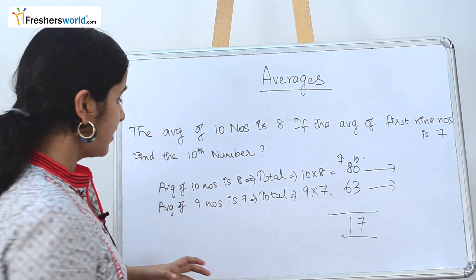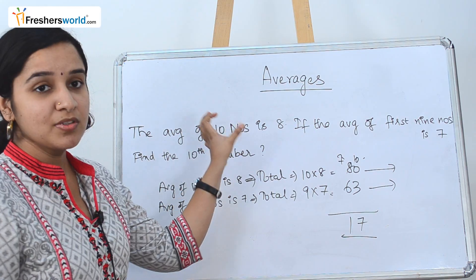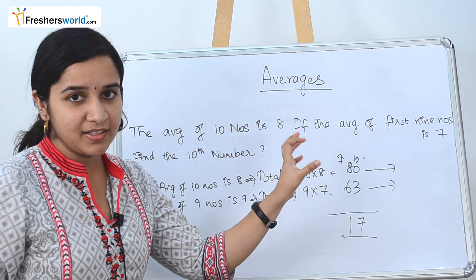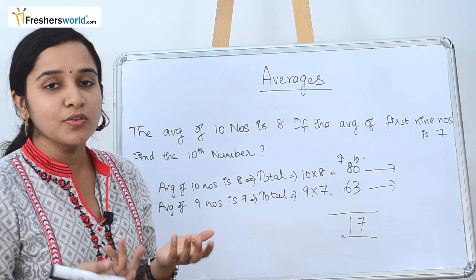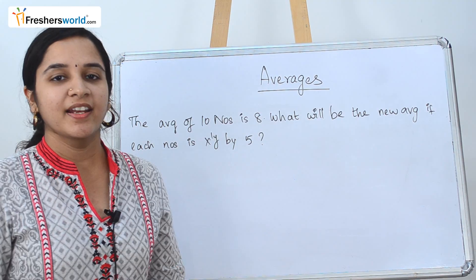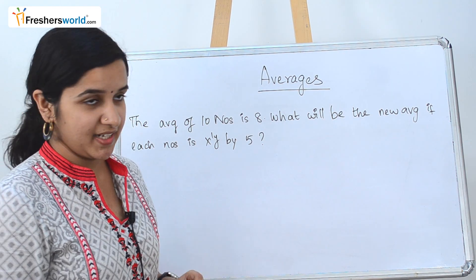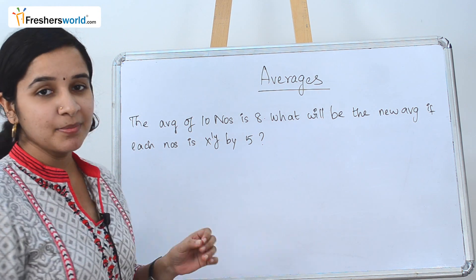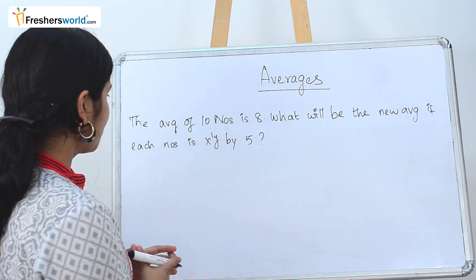So what did we do here? They gave the average of 10 numbers; we found the total value. Then they gave the average of the first 9 numbers; we found that total value. Subtracting gives the tenth number. Let's solve the next question. The next question is: the average of 10 numbers is 8. What will be the new average if each number is multiplied by 5?